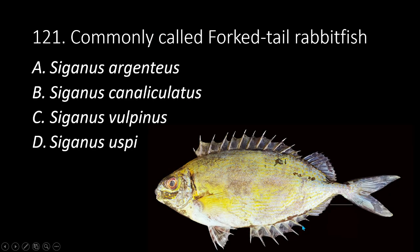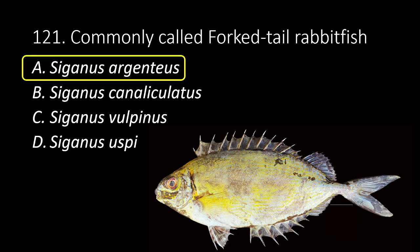121. Commonly called fork-tailed rabbit fish. A. Siganus argenteus. B. Siganus canaliculatus. C. Siganus vulpinus. D. Siganus uspi. The answer is A, Siganus argenteus.